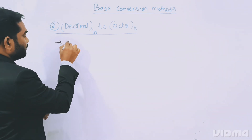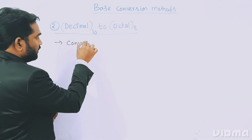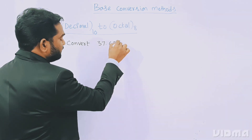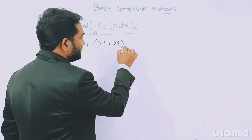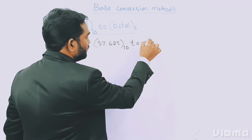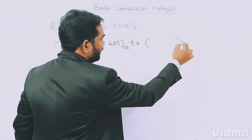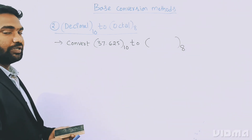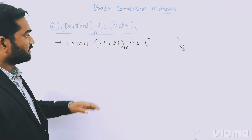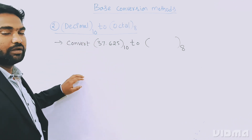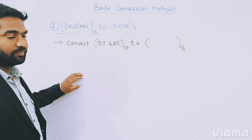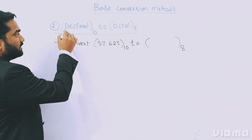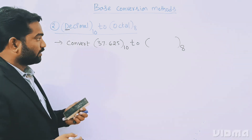Let me take one example. The question is: convert the number 37.625 of base 10 to octal. Whenever we are converting from decimal to octal or any number system, I told you in the previous class — from decimal to any base, we just need to divide.